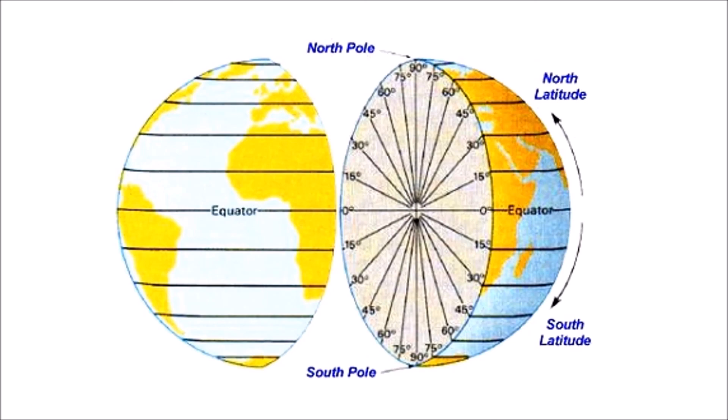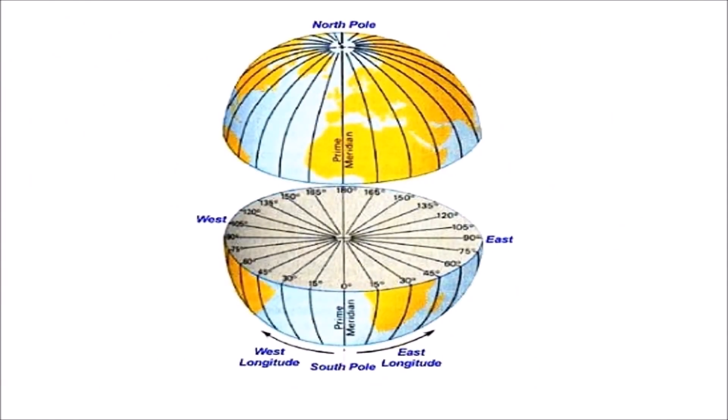And the longitudes are horizontal angle, east or west, measured from the prime meridian. And the maximum longitude can be 180 degree east or 180 degree west.